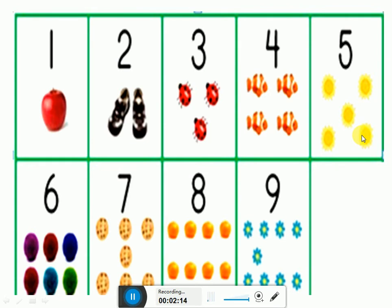5 flowers. Here is number 6 and here are 6 balls. How many balls? 6 balls. Let's count them. 1, 2, 3, 4, 5, 6.